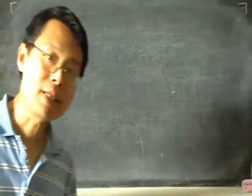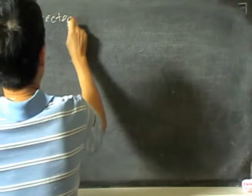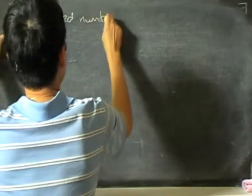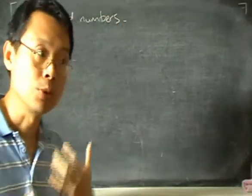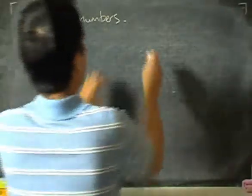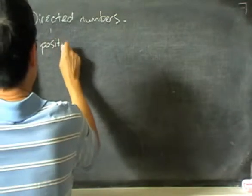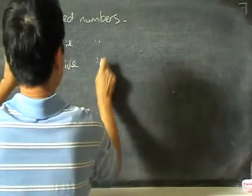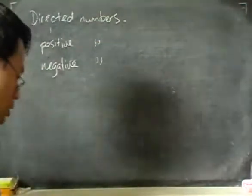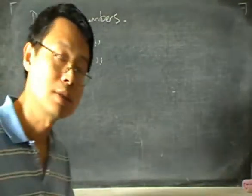Hello. Here we'll look at the idea of directed numbers. Directed numbers refer to positive and negative numbers. Let's look at some examples to see how this kind of number comes about.